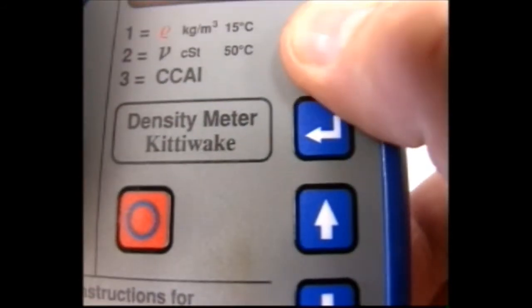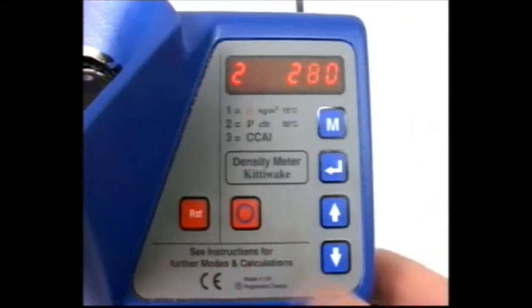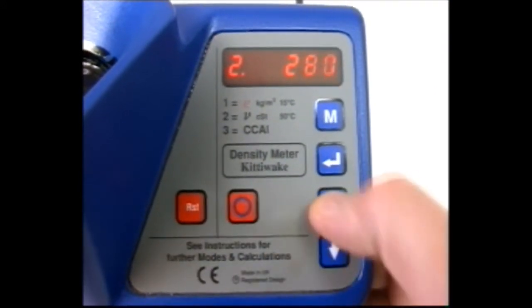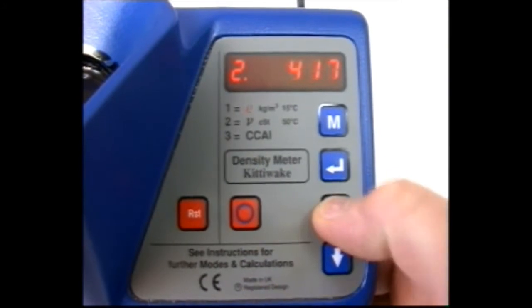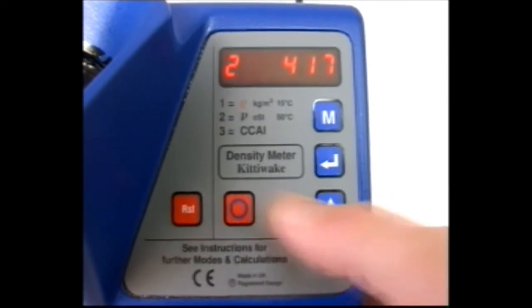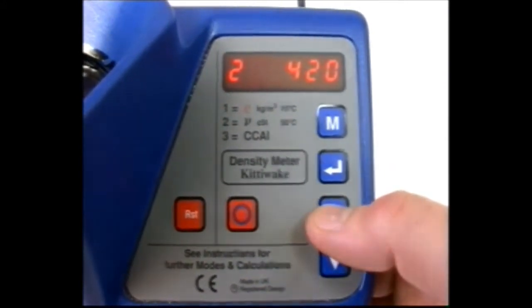Let's advance to mode 2. Select the oil viscosity in Centistokes at 50 degrees Celsius from the viscometer using the keys as before. Otherwise, use the default viscosity which is 280.